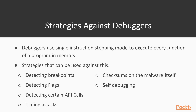Another technique is self-debugging, though it is not very commonly used. How self-debugging works is you associate your malware with every process it's running in — if the malware is associated with a debugging call, that already shows signs of a debugger. Lastly, the malware developer can send rogue instructions, which is basically anything that will throw the debugger off course.